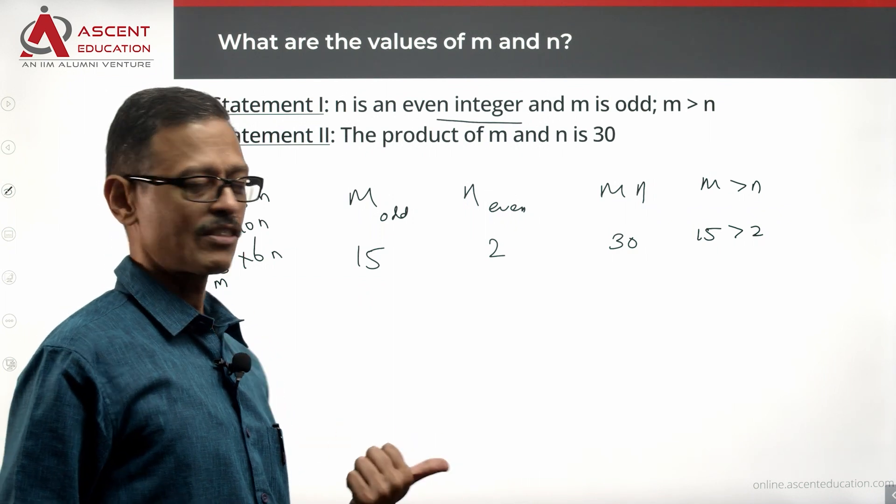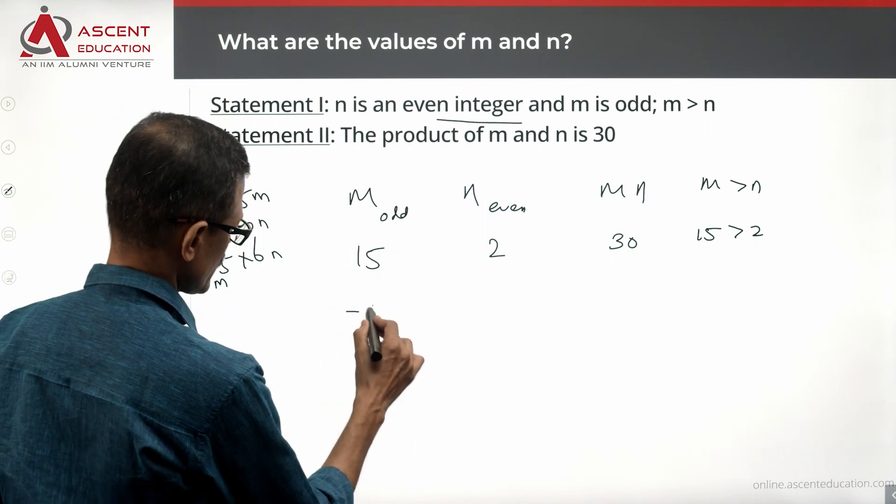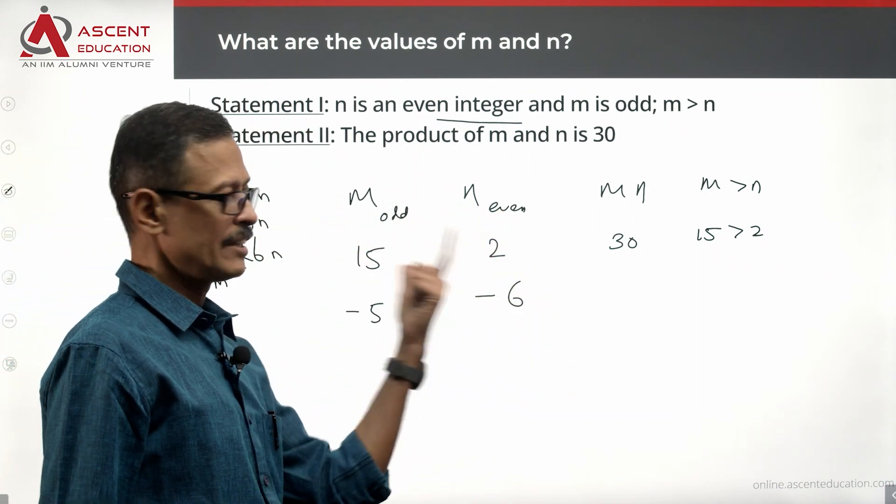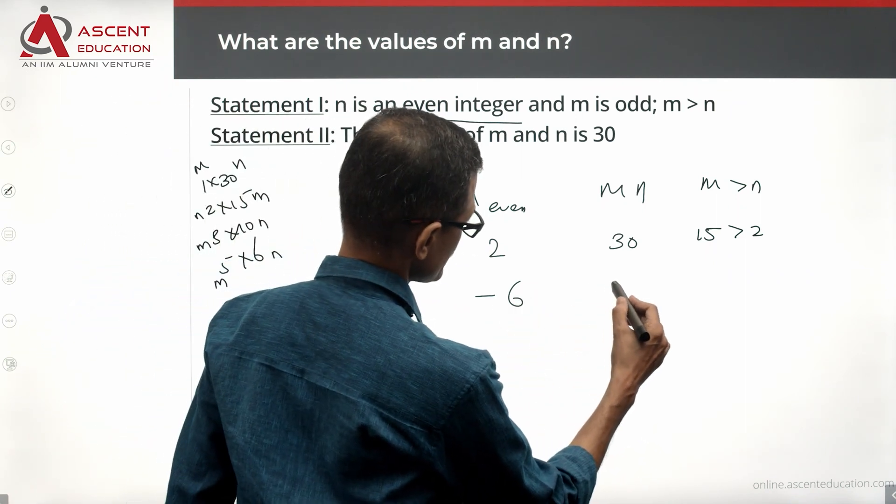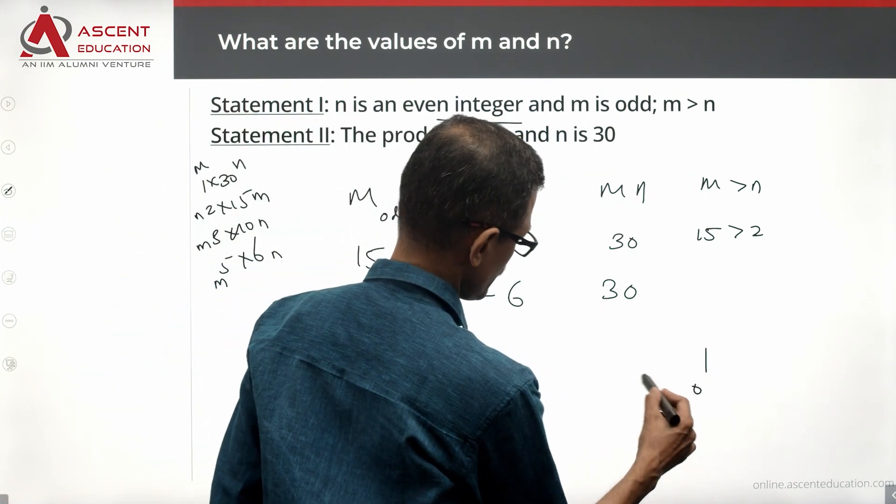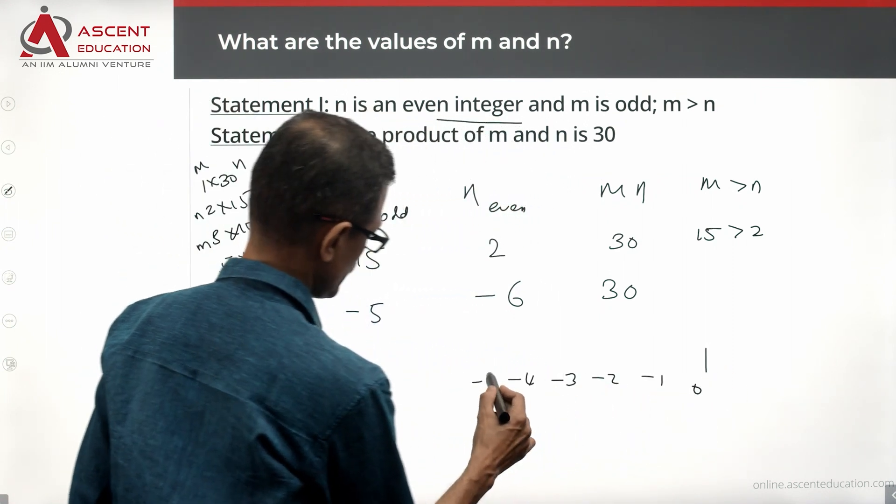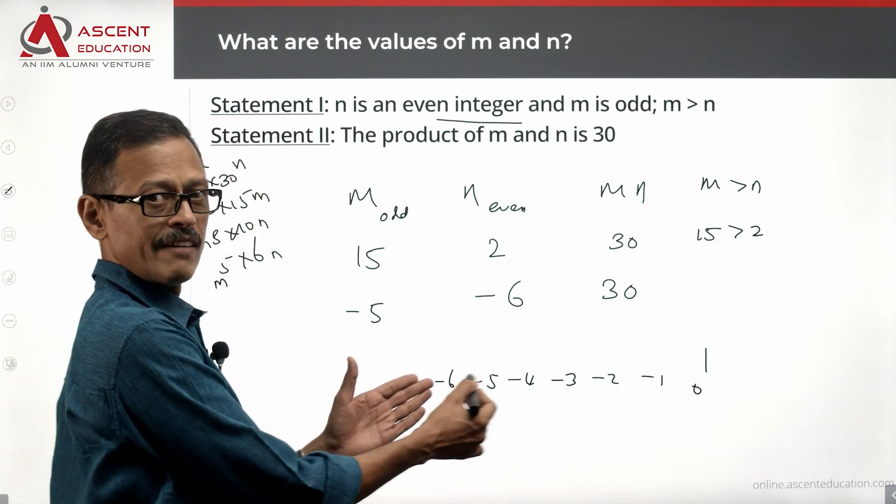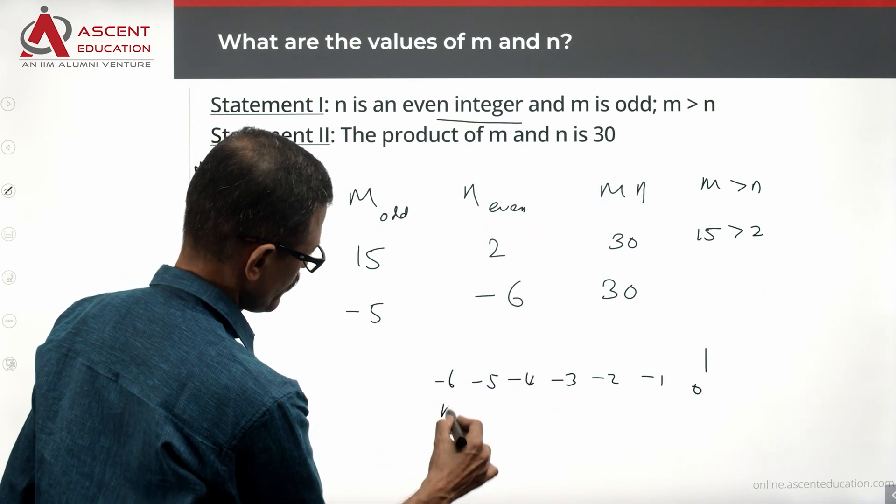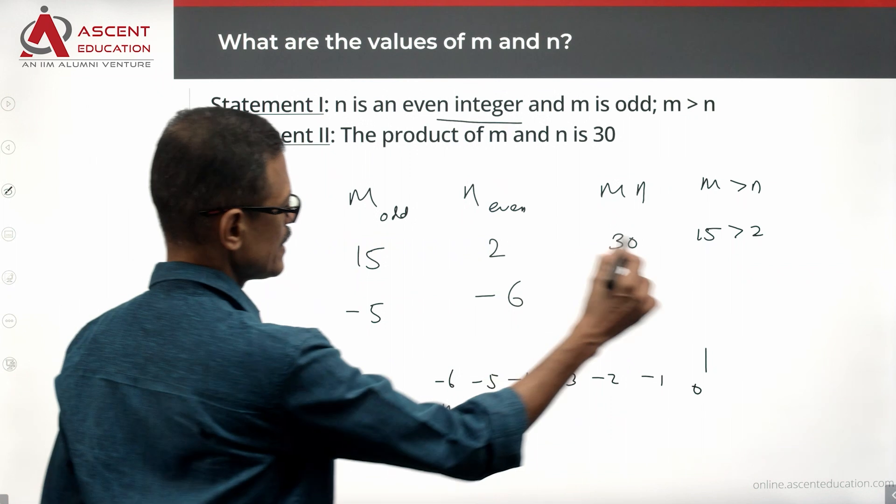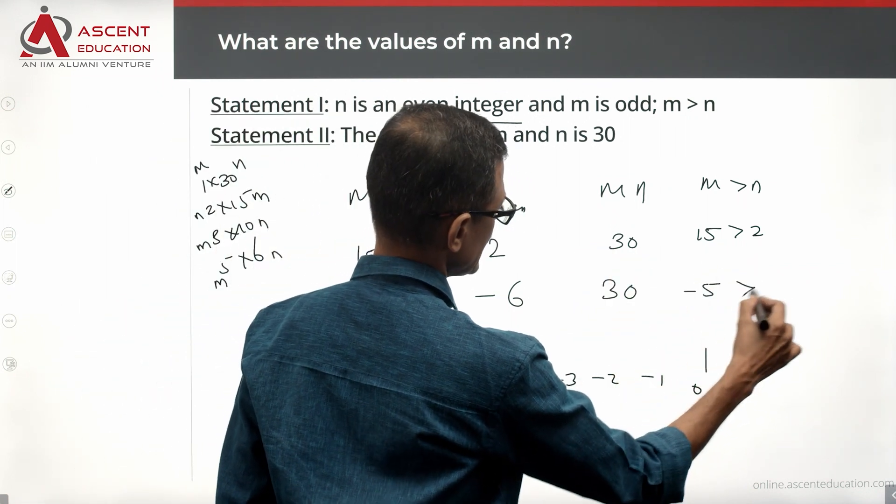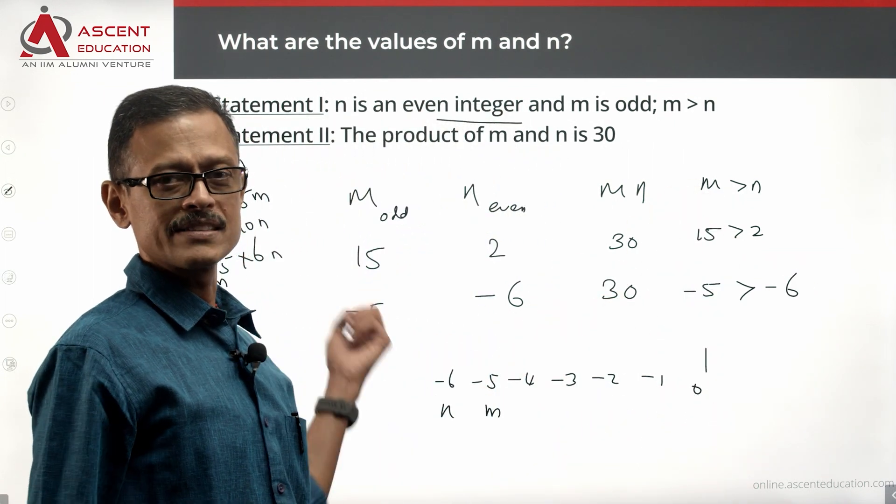If M is minus 5 and N is minus 6, is M odd? Yes. Is N even? Yes. The product, minus 5 into minus 6, equals 30. Look at the negative numbers. This is 0, minus 1, minus 2, minus 3, minus 4, minus 5, minus 6. As you go to the left, the value decreases. Minus 6 will be less than minus 5. Minus 6 is our value for N, minus 5 is our value for M. So M is greater than N. That will work out. So minus 5, which is the value of M, is greater than minus 6. So this value satisfies all the conditions.